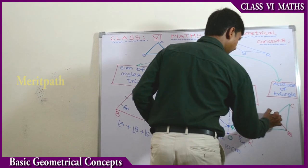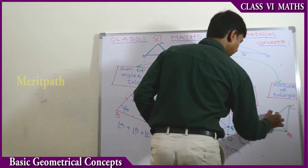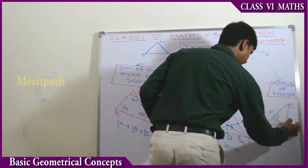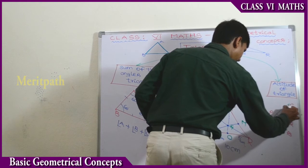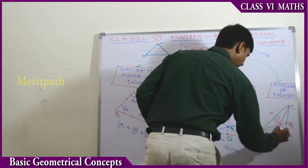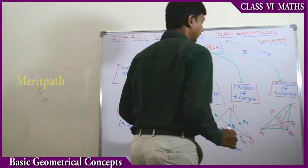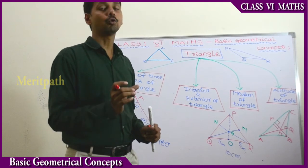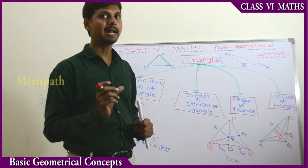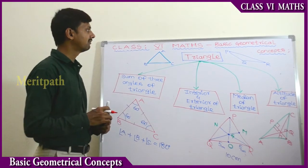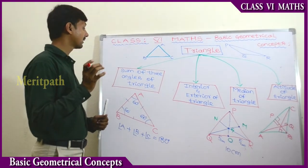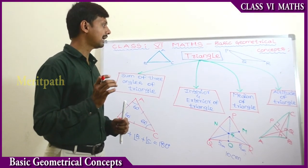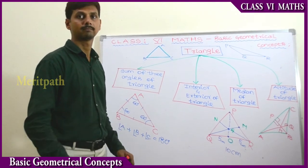From each vertex P, Q, and R, we draw a line which is perpendicular to the opposite side. We call it the Altitude of a triangle. So up to now, we have discussed the Triangle, the Angle Sum Property, Interior and Exterior of a triangle, Median of a triangle, and Altitude of a triangle.